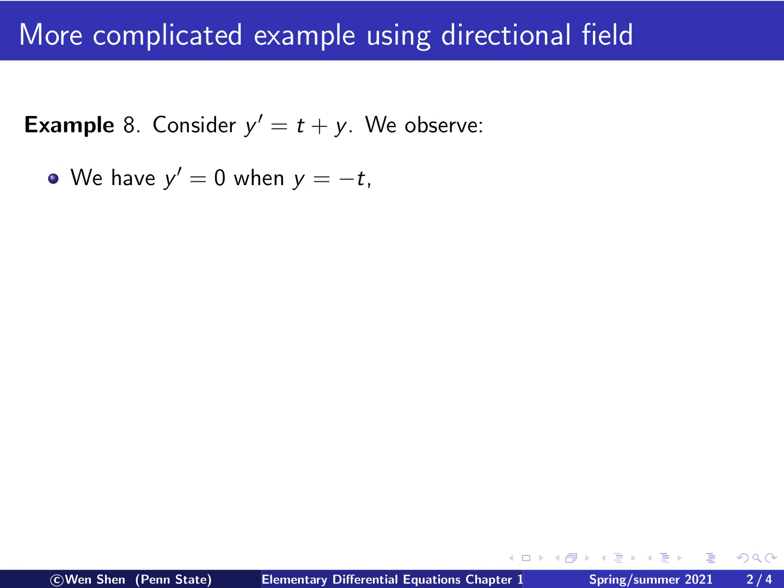Let's make some observations first. We're interested in where the directional field will have horizontal arrows. That's when y prime equals zero. We see that t plus y equals zero, then y must equal negative t. So in the y-t plane, this is a straight line going with slope negative one.